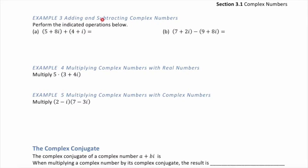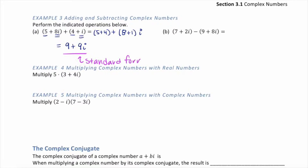Example 3: adding and subtracting complex numbers. When you add and subtract complex numbers, you add the real parts together and the imaginary parts together. For example, we write the real parts as 5 plus 4, and the imaginary parts as 8i plus i, which is 8 plus 1i. This becomes 9 plus 9i. Please leave it like this — don't factor anything out. This is standard form, with the real part and imaginary part separated.